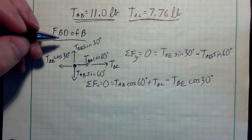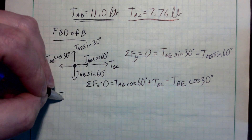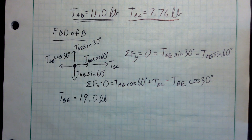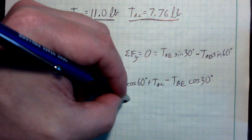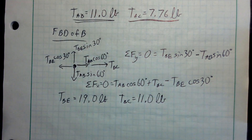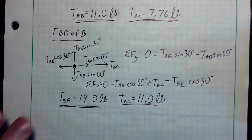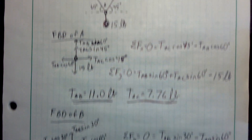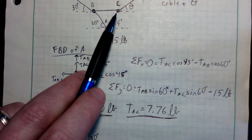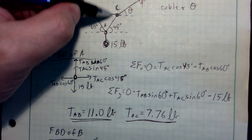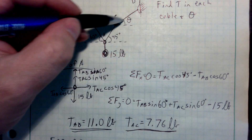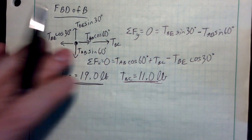Alright, here are the results — again, I did these hastily and have not checked them, so they might be wrong. TBE comes out to 19.0 pounds, and TBC ends up at 10.98, which we'll round to 11.0 pounds. That's four of the six unknowns. Now I've drawn free body diagrams at A and B. The last knot is C, which has three cables: the only unknown there is TCD and its angle.